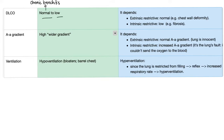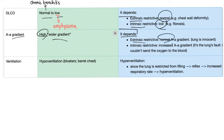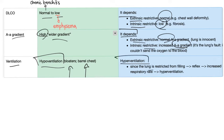DLCO in obstructive is normal or low. In restrictive, it depends: if extrinsic (not the lung's fault), DLCO is normal; if intrinsic (the lung's fault), it's low. Similarly, the A-a gradient is widened in obstructive. In restrictive, it depends — normal if extrinsic, widened if the lung itself has a problem. For ventilation: obstructive patients hypoventilate — they are bloaters with barrel chest who cannot get the air out and develop wheezing. Restrictive patients hyperventilate as a reflexive compensation to try to get more oxygen in.